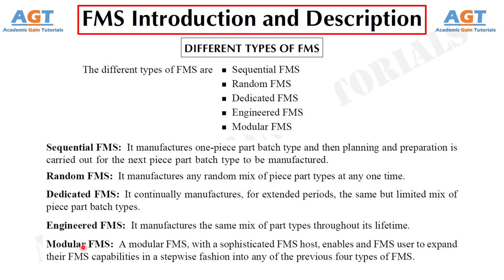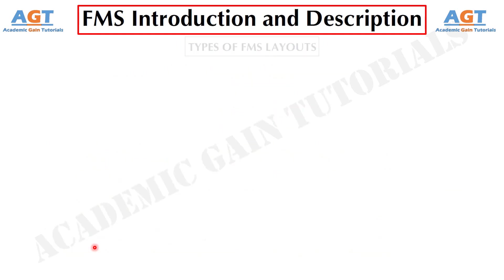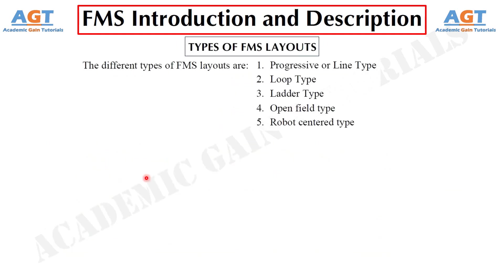Now let's look into the types of FMS layouts. The different types of FMS layouts are: progressive or line type FMS layout, loop type FMS layout, ladder type FMS layout, open field type FMS layout, and robot-centered type FMS layout.